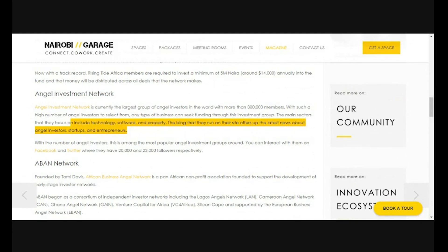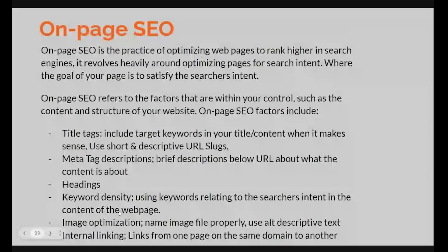I'm going to move to the next one: image optimization. Image optimization is a somewhat simple but technical element. Now, if you come across different websites where there are images in the content that you're reading — let's say you're looking at 'top five meal plans to lose weight' — there are going to be images of food relative to that search.